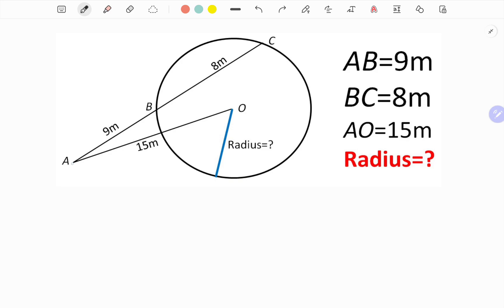Another line segment AC is drawn, among which AB is the exterior part from the circle which is 9 meters length, while the chord BC has length 8 meters. We have to find the radius of this circle by these all given information.